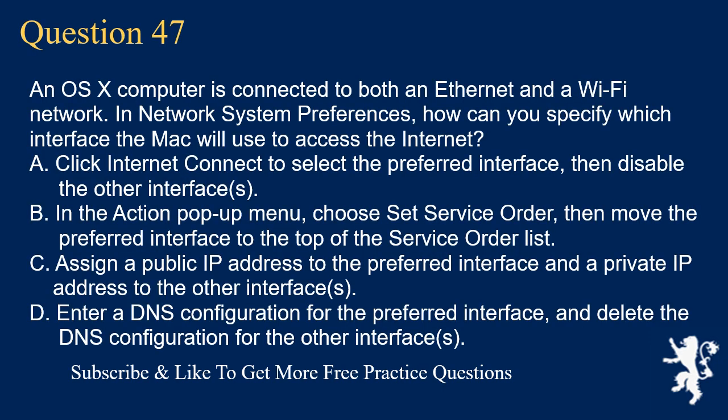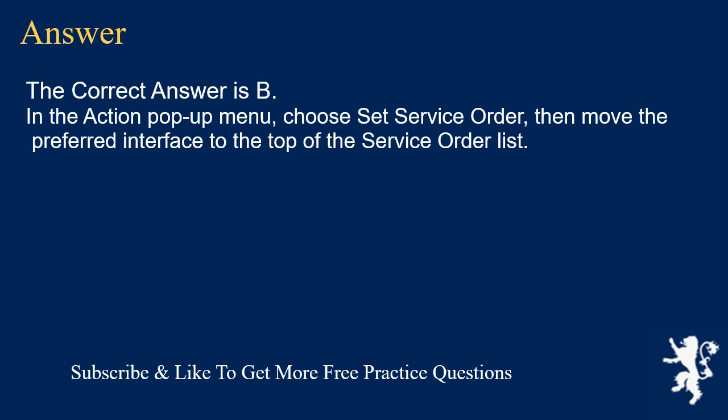Question 47. An OSX computer is connected to both an Ethernet and a Wi-Fi network. In Network System Preferences, how can you specify which interface the Mac will use to access the Internet? A. Click Internet Connect to select the preferred interface, then disable the other interfaces. B. In the Action pop-up menu, choose Set Service Order, then move the preferred interface to the top of the service order list. C. Assign a public IP address to the preferred interface and a private IP address to the other interfaces. D. Enter a DNS configuration for the preferred interface and delete the DNS configuration for the other interfaces. The correct answer is B: In the Action pop-up menu, choose Set Service Order, then move the preferred interface to the top of the service order list.